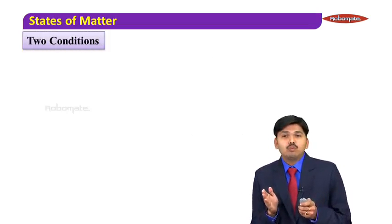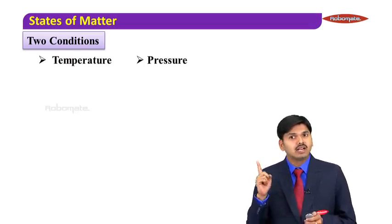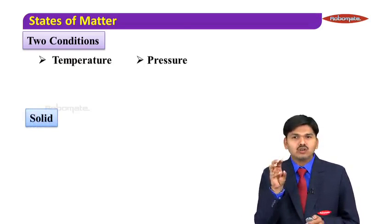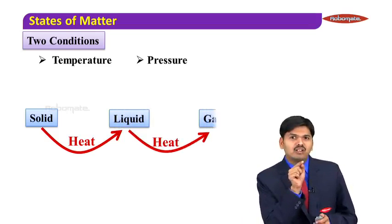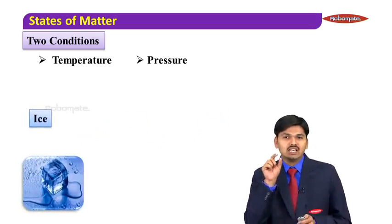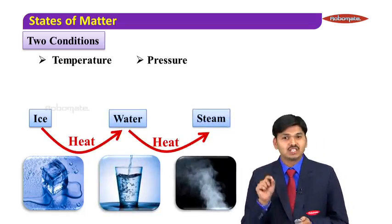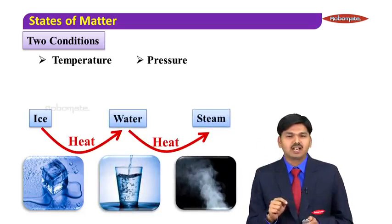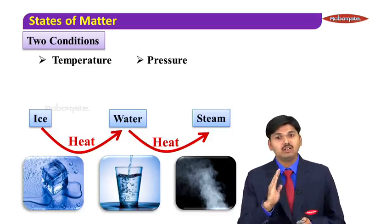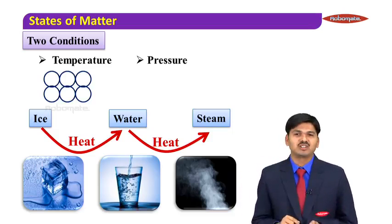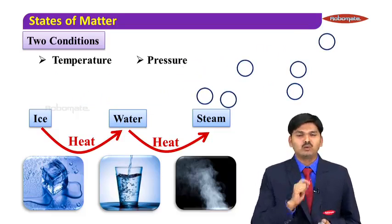There are two main conditions by which states of matter vary: temperature and pressure. For solid, I can interconvert it into liquid just by heating, and liquid into gas just by heating. For example, ice converts to water, and water converts to steam by heating. Temperature is the main criteria to convert solid into liquid and liquid into gas. Similarly, I can convert gas into liquid and liquid into solid by applying pressure.